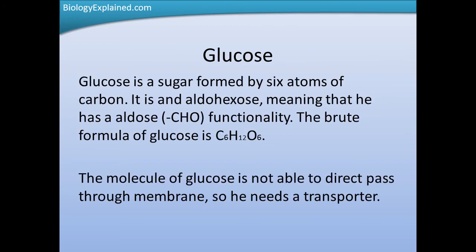Glucose is a sugar formed by six atoms of carbon. It is an aldohexose, meaning that it has aldose functionality. The brute formula of glucose is C6H12O6. The molecule of glucose is not able to directly pass through the membrane, so it needs a transporter.